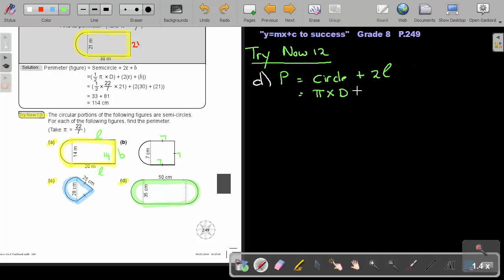And the first full circle will just be pi times the diameter, you can just call it D, plus two lengths. Okay, so basically we will just get pi, 22 over 7, times the diameter, that's 45, plus the two lengths, and that's 50.